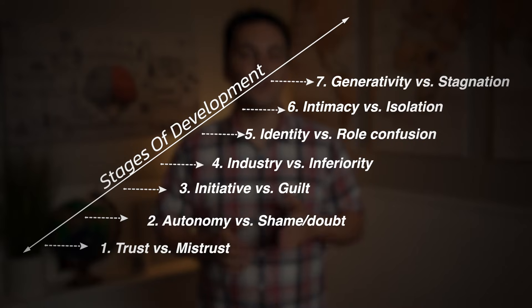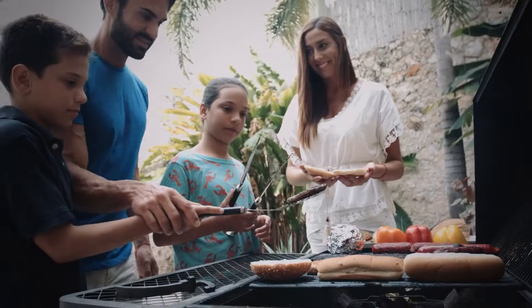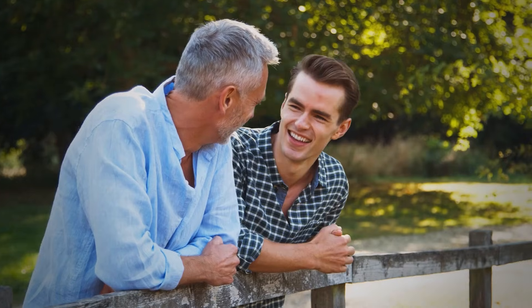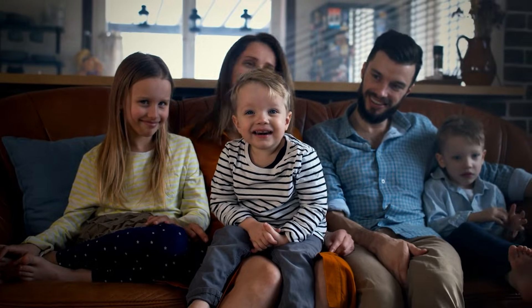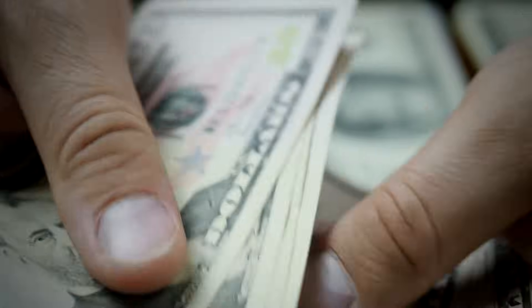Eventually, an individual moves into generativity versus stagnation. This generally happens in a person's 40s. Here, an individual seeks to make a positive impact on the next generation, oftentimes through work, parenting, or community involvement. The people at work and at home are often the ones who have the greatest influence during this stage. If an individual does not feel like they have a purpose, or if they were unable to resolve conflicts from previous stages, they may become pessimistic and feel stuck in life. Individuals who feel stuck may start to feel hopelessness or question what they're doing with their life, potentially leading to a big life change such as changing careers or making a big purchase — sometimes referenced as a midlife crisis.